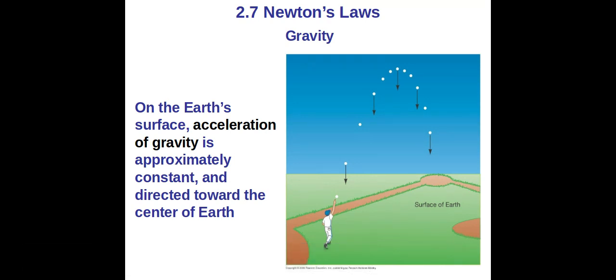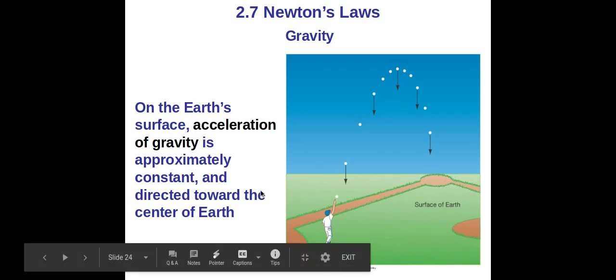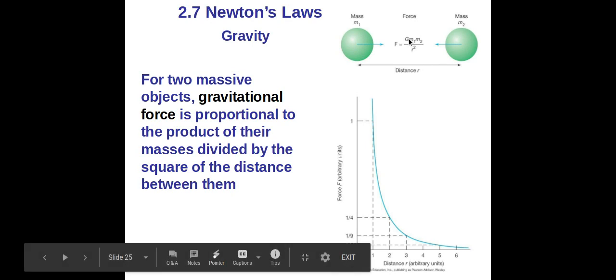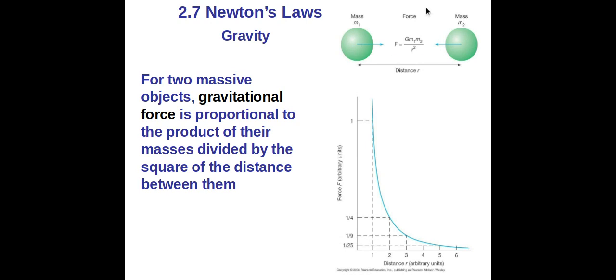He also came up with the law of gravity. On Earth's surface, acceleration of gravity is approximately constant: 9.8 meters per second squared towards the center of the Earth. Newton's law of gravity is this. This is how gravity between two objects occurs. If you have two objects, the gravitational force is equal to the gravitational constant times the mass of the first one times the mass of the second one divided by the radius squared. This radius is going to be the number that is going to determine how much force there is. It's going to have the greatest factor.